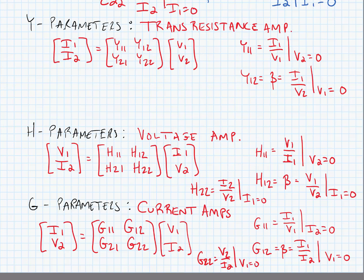So we're going to deploy these network parameters in order to find out what our feedback factor beta is in a general case for any type of amplifier, once we identify whether the amplifier is to be used for transconductance, transresistance, voltage, or current gain. We'll learn how to identify that in the next set of videos.